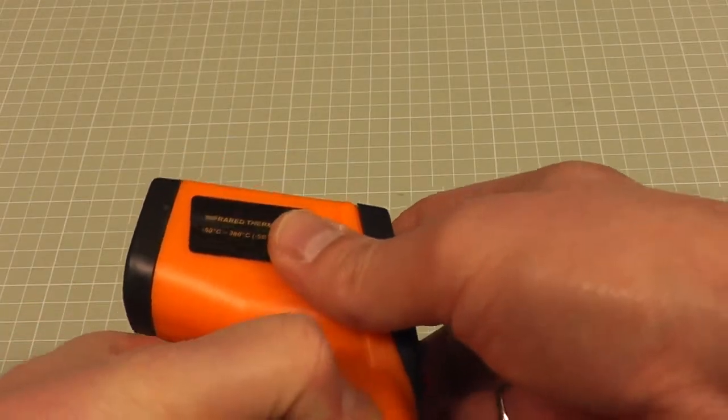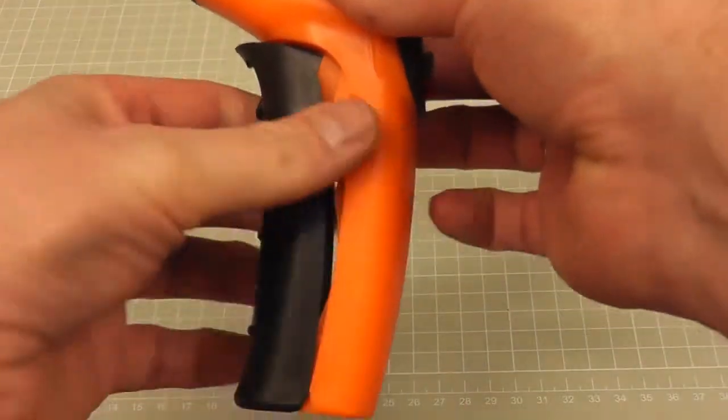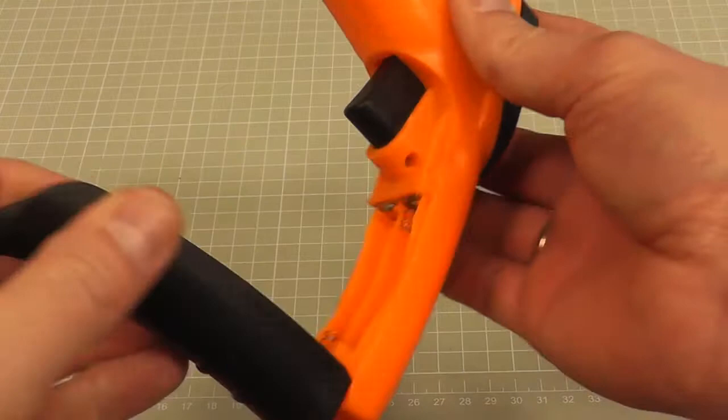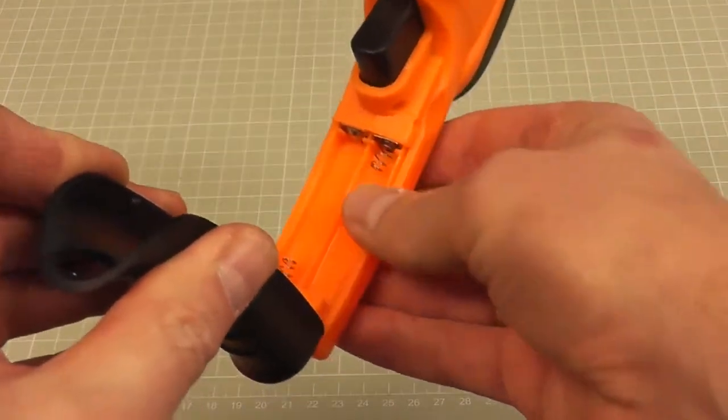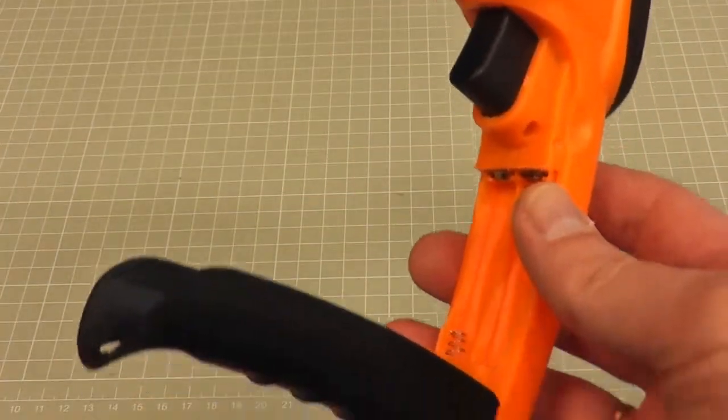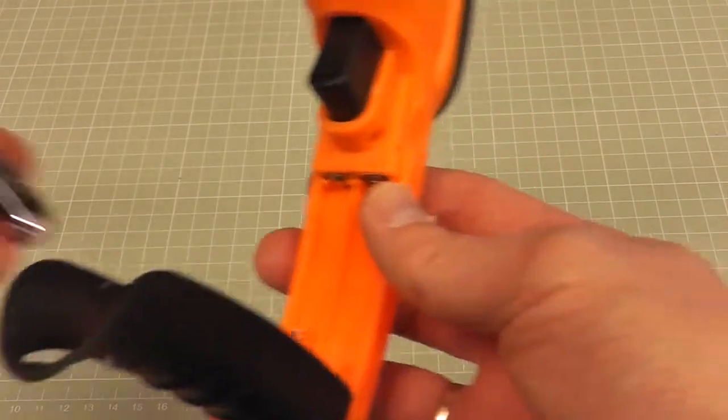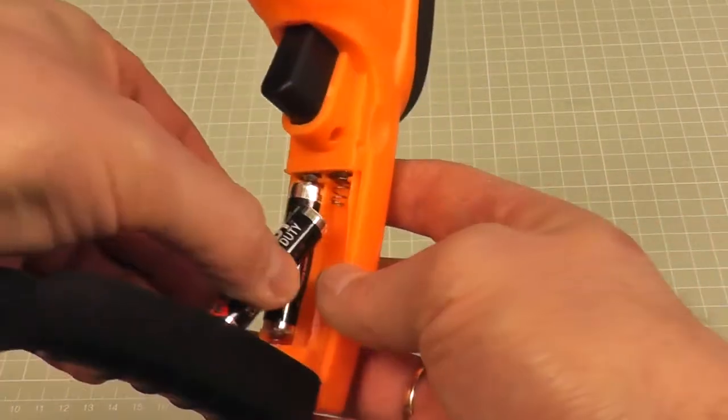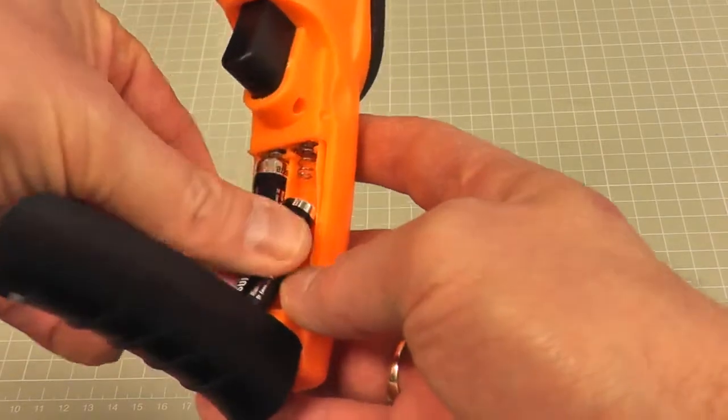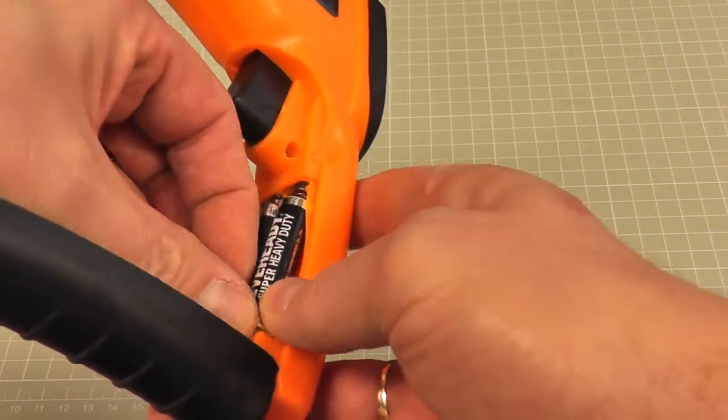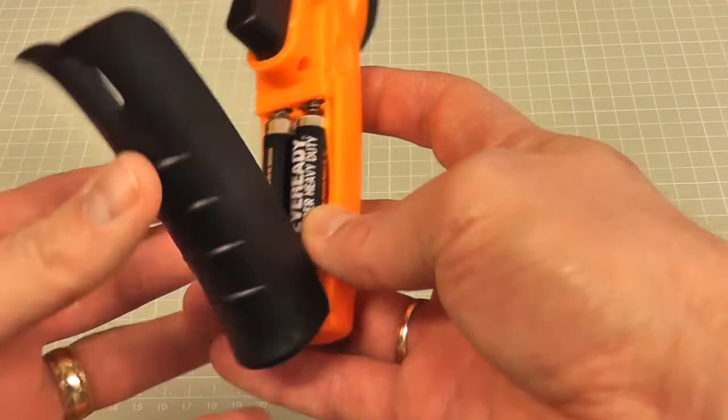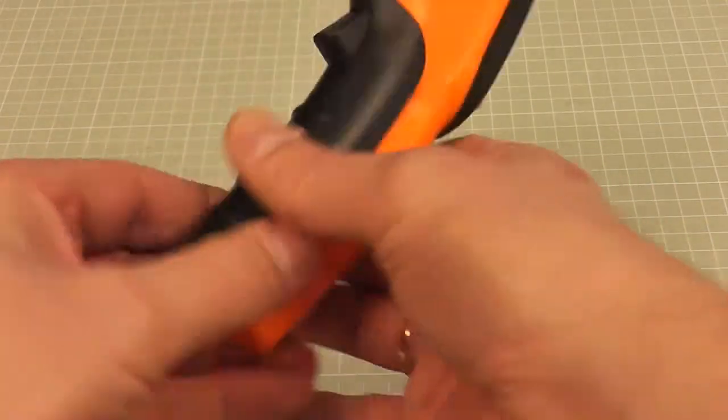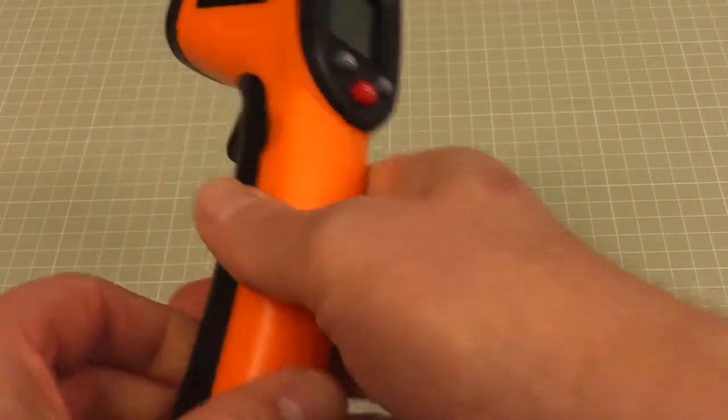In this particular one, you pull down here and the battery compartment is here. This one takes two AAA batteries. I've seen some that take the square nine-volt batteries, and I imagine they probably last a lot longer, but I don't know what the current draw is on this sort of device. It just snaps back into place there.